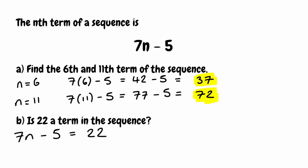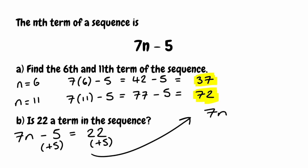We've got a two-step equation to solve. I'm going to get rid of the minus 5 first — I can add 5 to both sides. Adding 5 to the left-hand side leaves us with 7n, and on the right-hand side 22 plus 5 gives us 27.